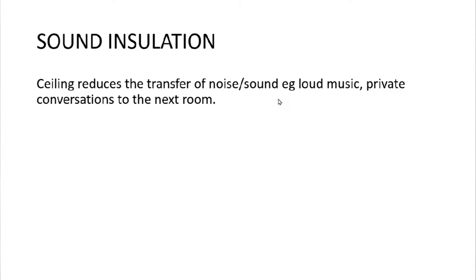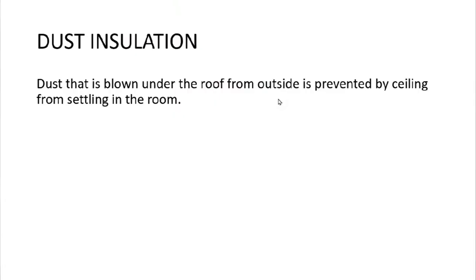The fourth advantage is sound insulation: ceilings reduce the transfer of noise, such as loud music or private conversations from the next room. A house with a ceiling can contain sound better than one without. Also, noise from corrugated iron sheets can be concealed if there is a ceiling. The fifth advantage is dust insulation: dust blown under the roof from outside is prevented by the ceiling from settling in the room.